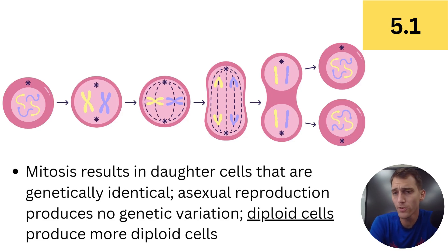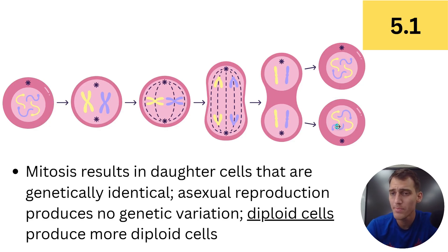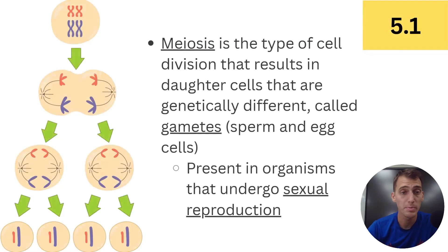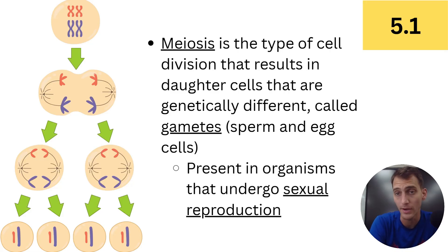Both the parent cell and the resulting daughter cells in mitosis are what we call diploid, meaning there are two sets of chromosomes — I'll explain that further in a moment. But meiosis is a different type of cell division that results in daughter cells that are genetically different from each other, and those cells are called gametes.